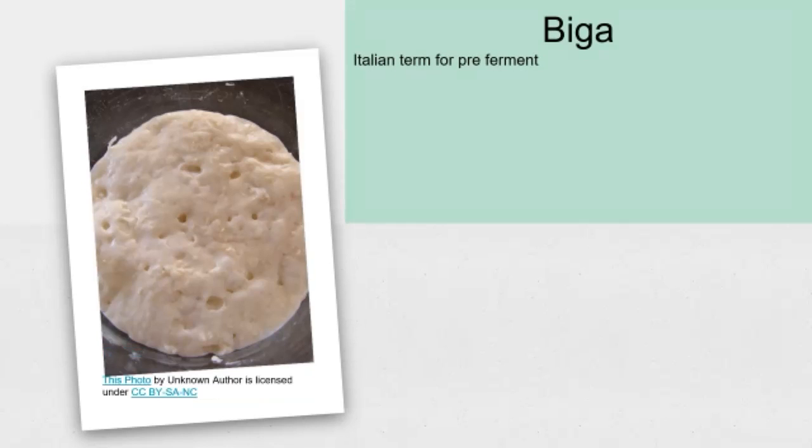The next word is biga, which is an Italian term for pre-ferment.